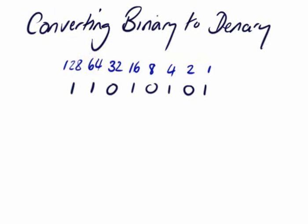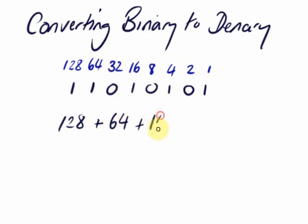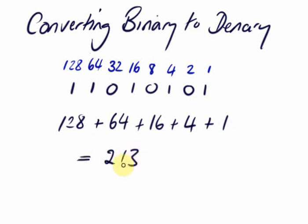And then we go for the conversion. So this is 1 lot of 128 plus 1 lot of 64, plus no 32s, 1 lot of 16, plus no 8s, 1 lot of 4, no 2s, then the 1. Add that lot together and we end up with 213.